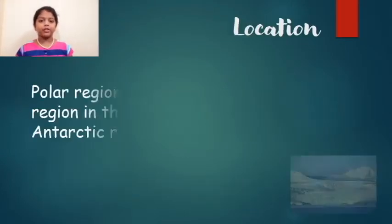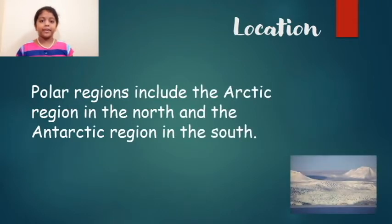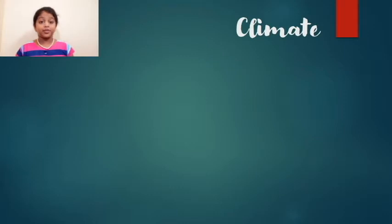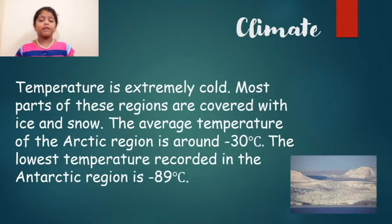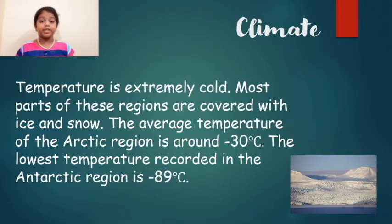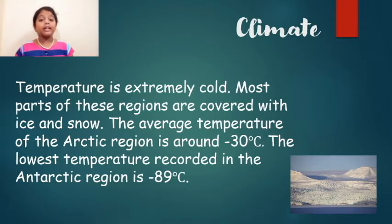Polar regions include the Arctic region in the north and the Antarctic region in the south. The temperature is extremely cold and most parts of these regions are covered with ice and snow. The average temperature of the Arctic region is around minus 30 degrees Celsius, and the lowest temperature recorded in the Antarctic region is minus 89 degrees Celsius.